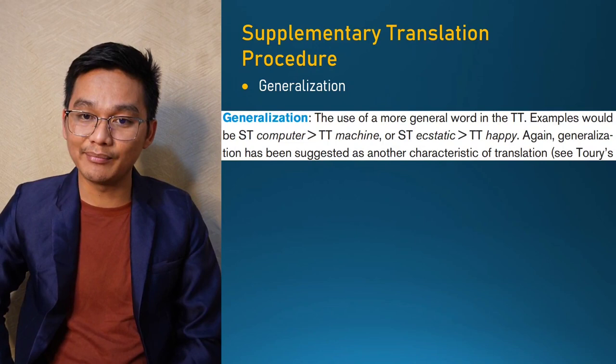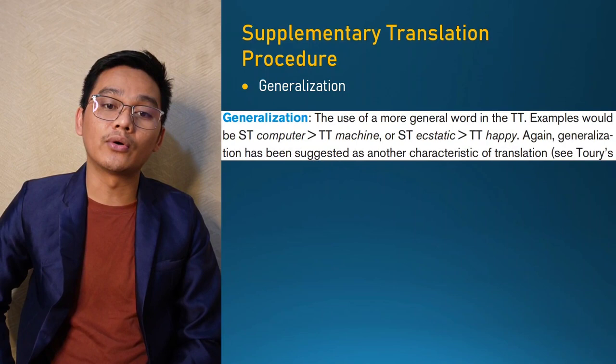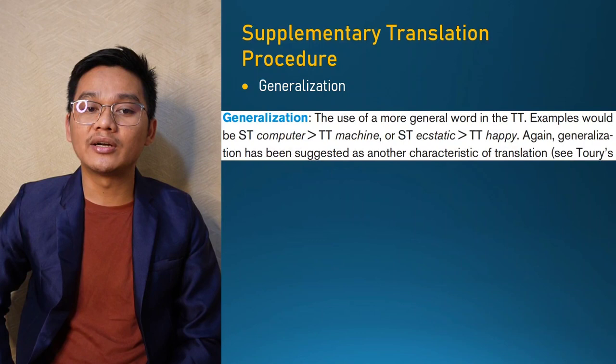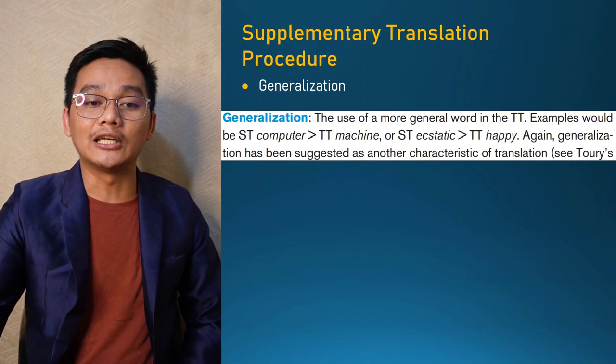Generalization is another supplementary procedure — the use of a more general word in the target text. For example, the source text 'computer' becomes 'machine' in the target text, or 'ecstatic' becomes 'happy.' Generalization has been suggested as another characteristic of translation.